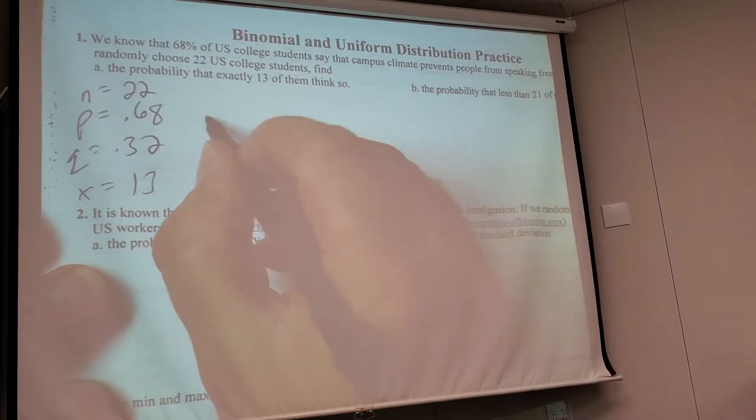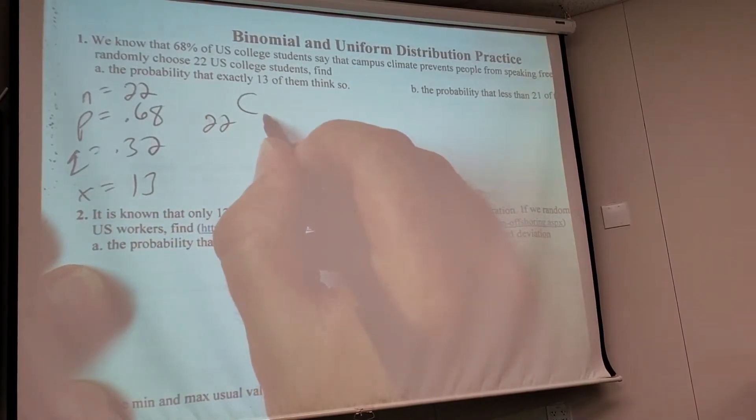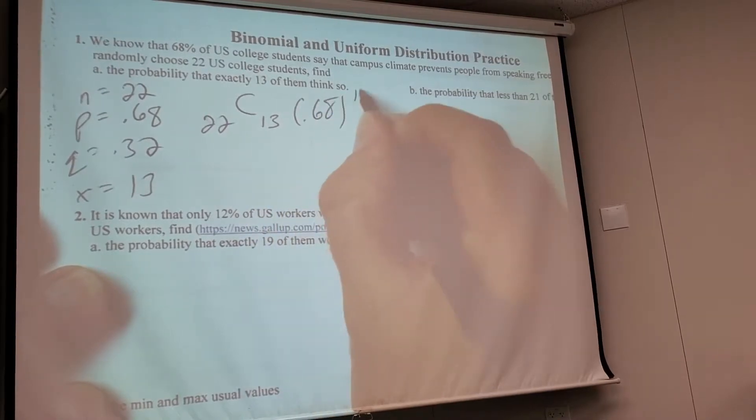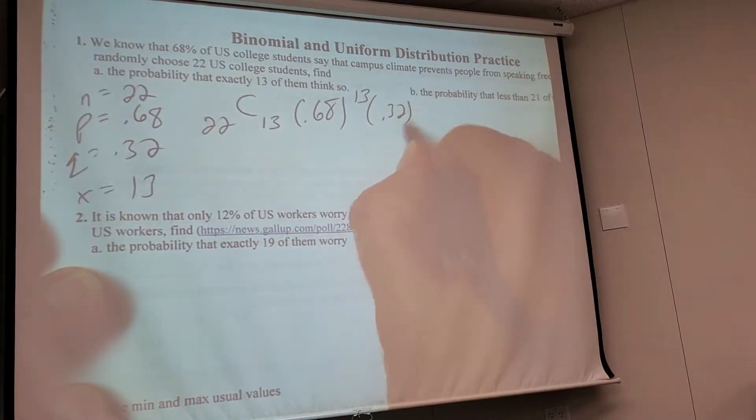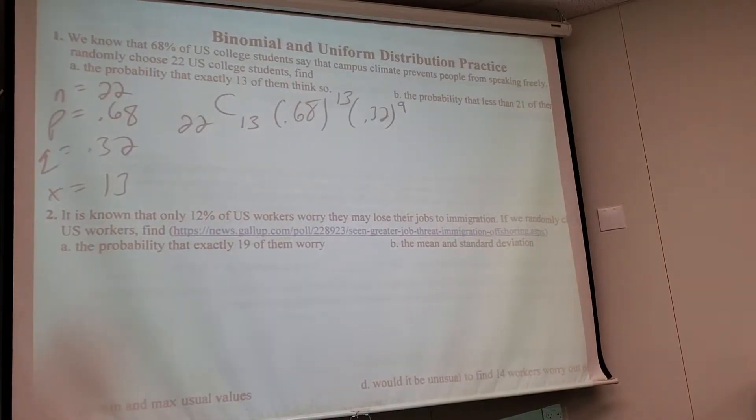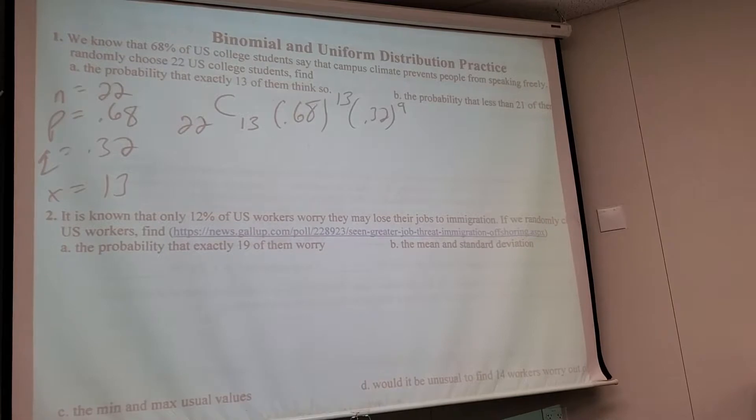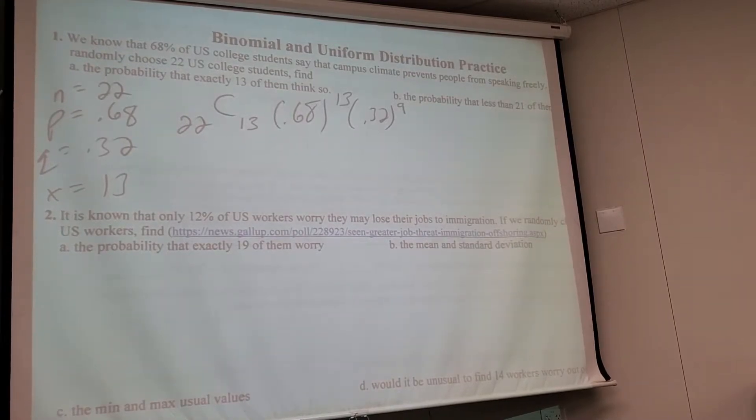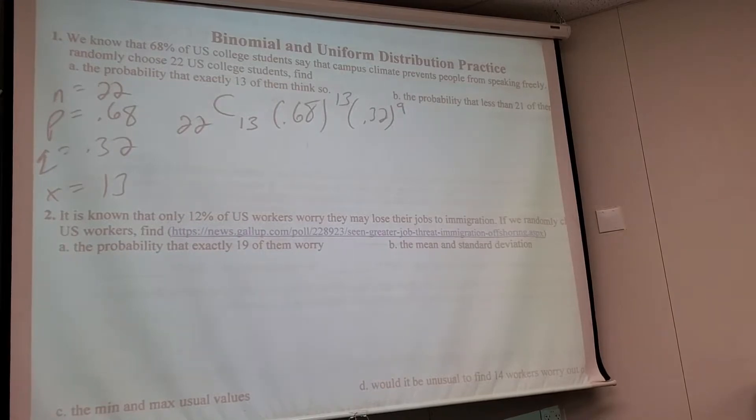13. So I got 22 people chosen, 13. So how many successes? 13. How many failures? 32. 9. How did I get 9? 22 minus 13. That's right. That's whoever's left over for the other one. If 13 are in the first camp, 9 are left for the other one.